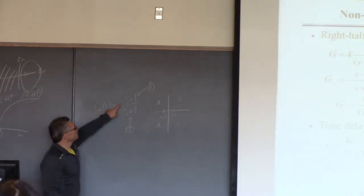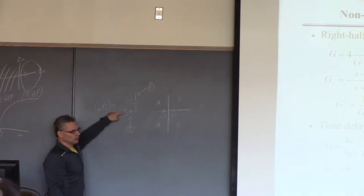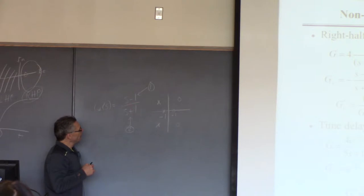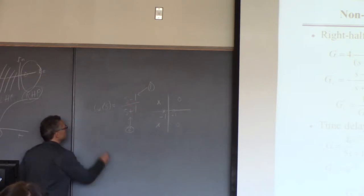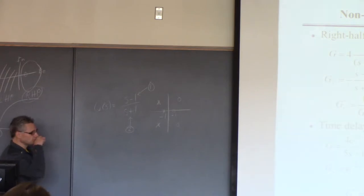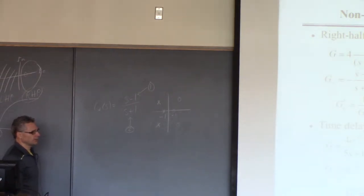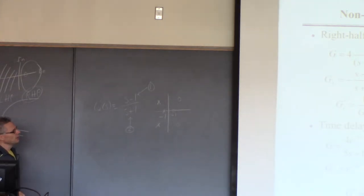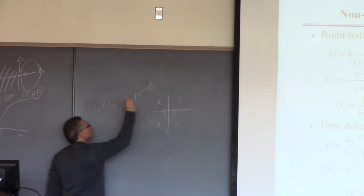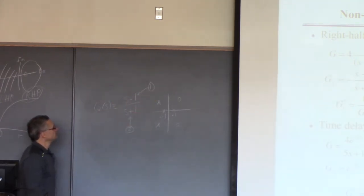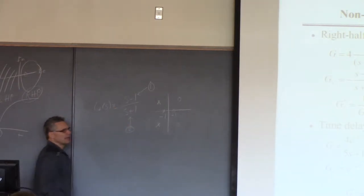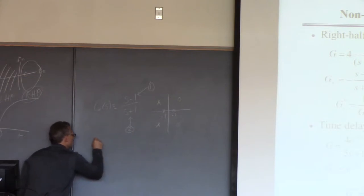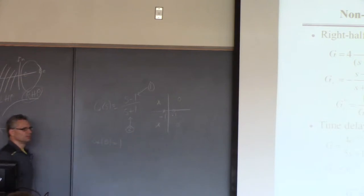An all-pass is a thing where the zeros and the poles are mirror reflections of each other across the imaginary axis. Step one: put the right half plane zero in the numerator. Step two: put its mirror reflection as a pole in the denominator. Now check the gain of this thing by setting s equals zero — you see the gain is minus one, not plus one. So that's why I append a minus sign. That makes sure the gain is one, and I've satisfied all three requirements.